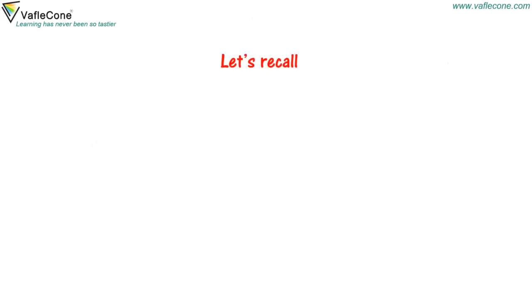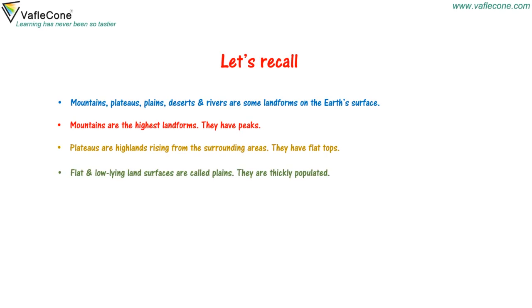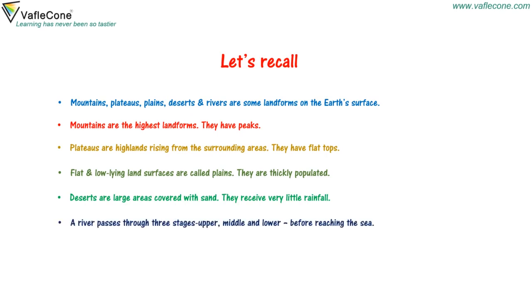Let's recall: Mountains, plateaus, plains, deserts, and rivers are some landforms on the earth's surface. Mountains are the highest landforms and have peaks. Plateaus are highlands rising from surrounding areas with flat tops. Flat and low-lying land surfaces are called plains and they are thickly populated. Deserts are large areas covered with sand that receive very little rainfall. A river passes through three stages — upper, middle, and lower — before reaching the sea.